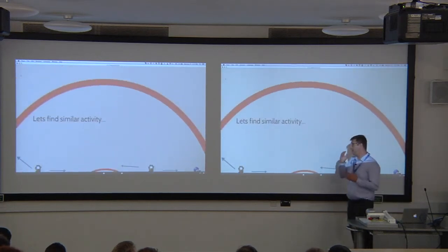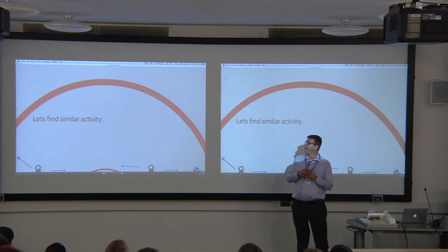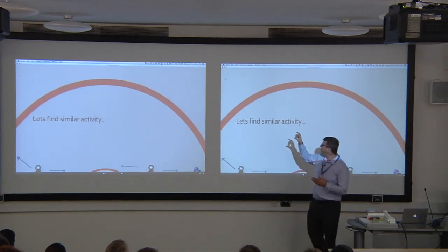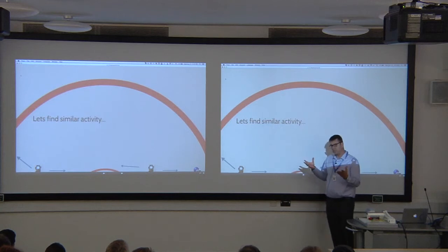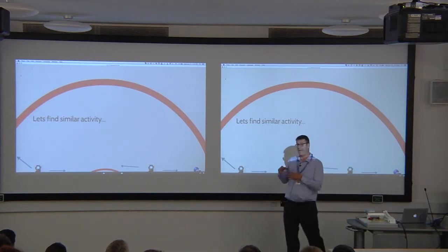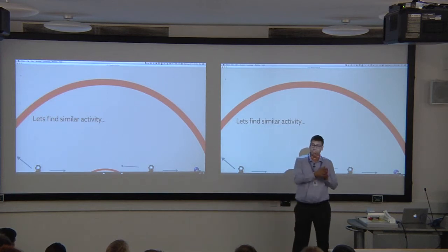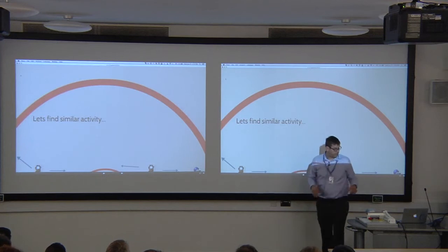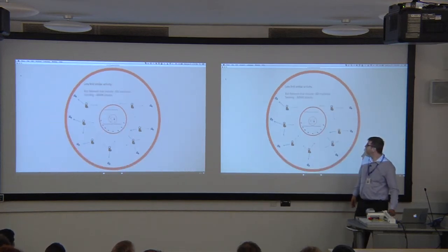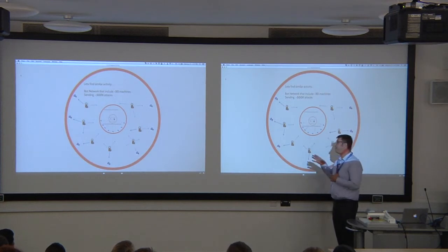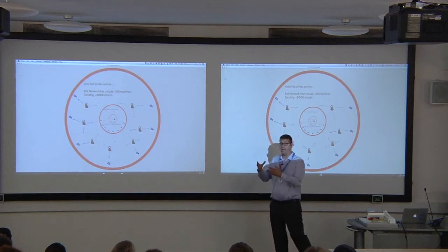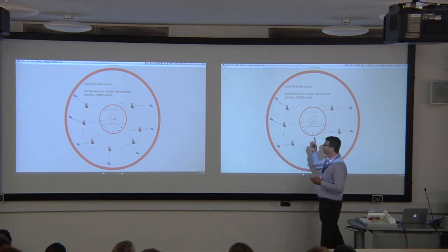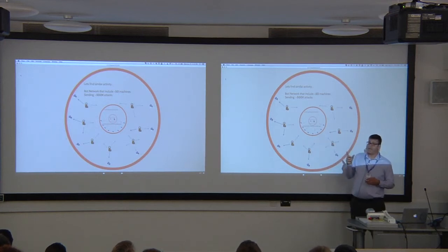But that's not enough. I decided to take it one step further and try to find similar activities - to find other bad actors behaving the same as the actor we just saw. In this case - the interesting part - I was able to see a botnet hitting my customer using more than 50 machines, most of them compromised web servers being used as an attacking tool, sending over 500,000 attacks over a timeframe of one week.